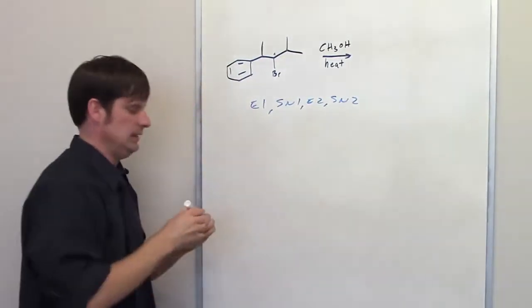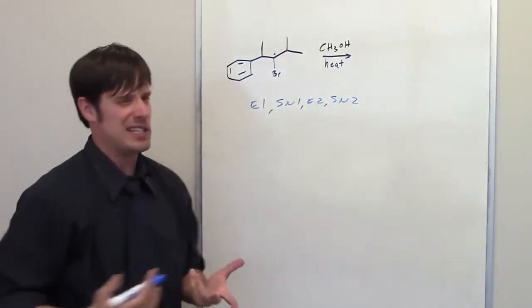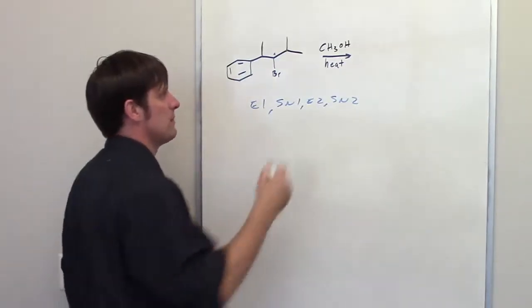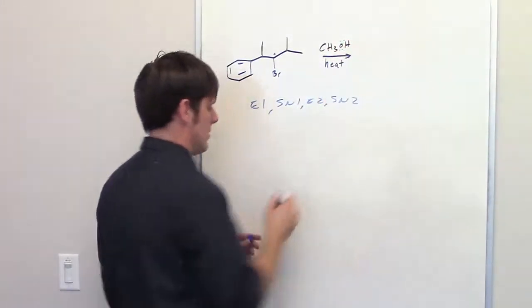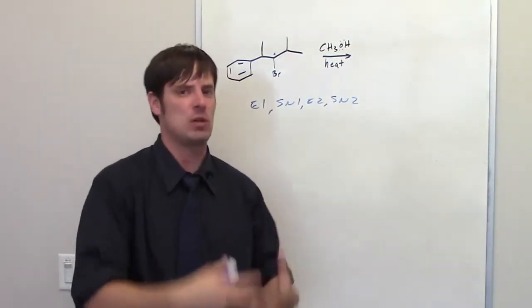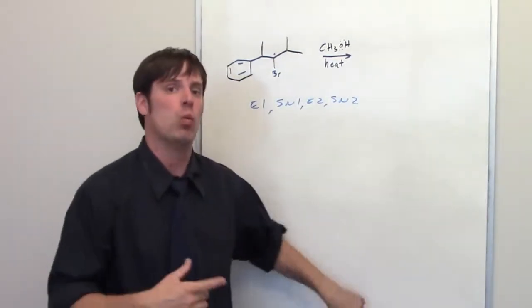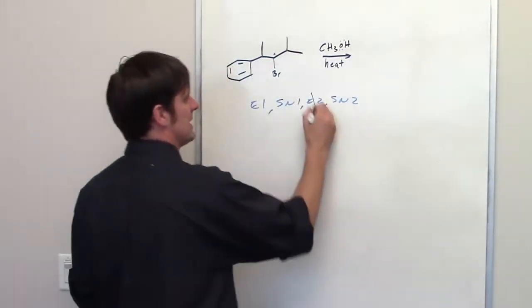My next question is, is my nucleophile slash base strong or weak? My nucleophile slash base is just methanol. All it has is lone pairs. It does not have a localized negative charge, as would be the case if this oxygen were bonded to a sodium or potassium or lithium. So it's weak. Because it's weak, it's going to do a one reaction. So I'll cross off my E2 and SN2.